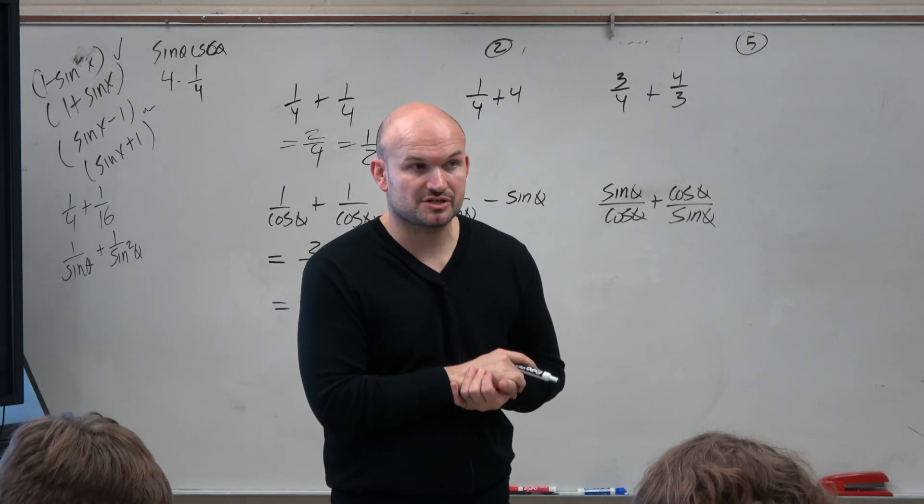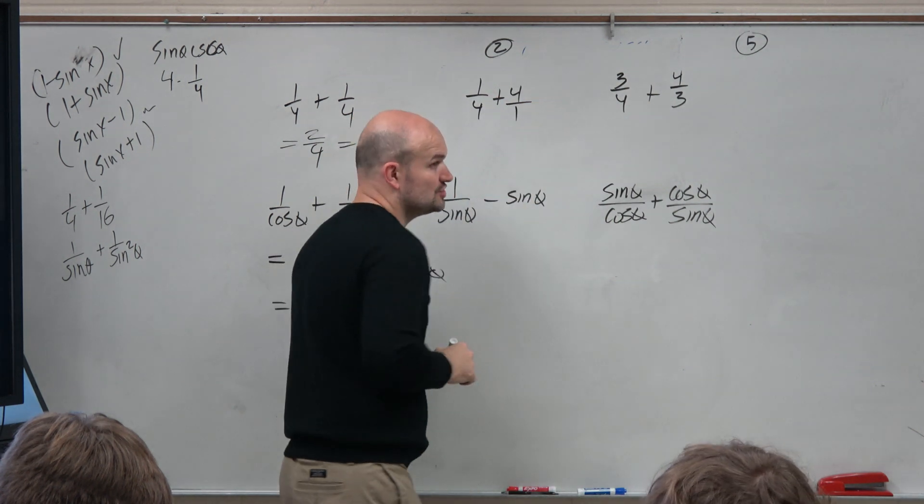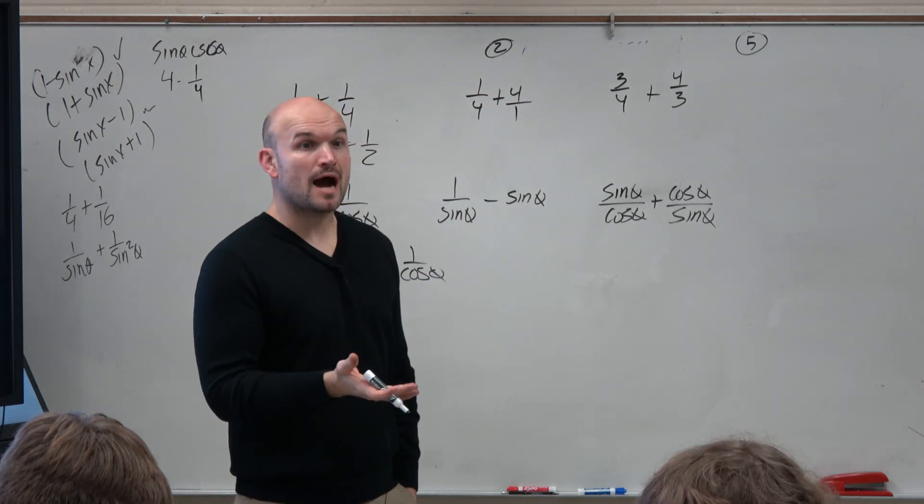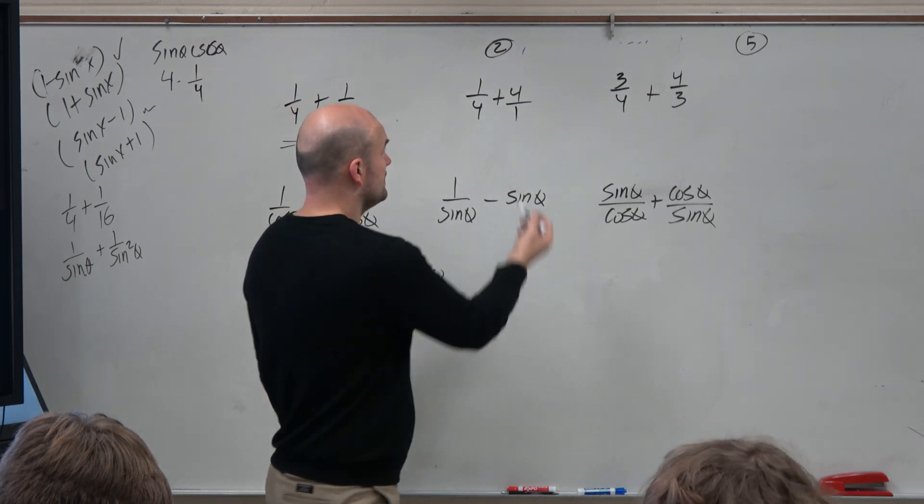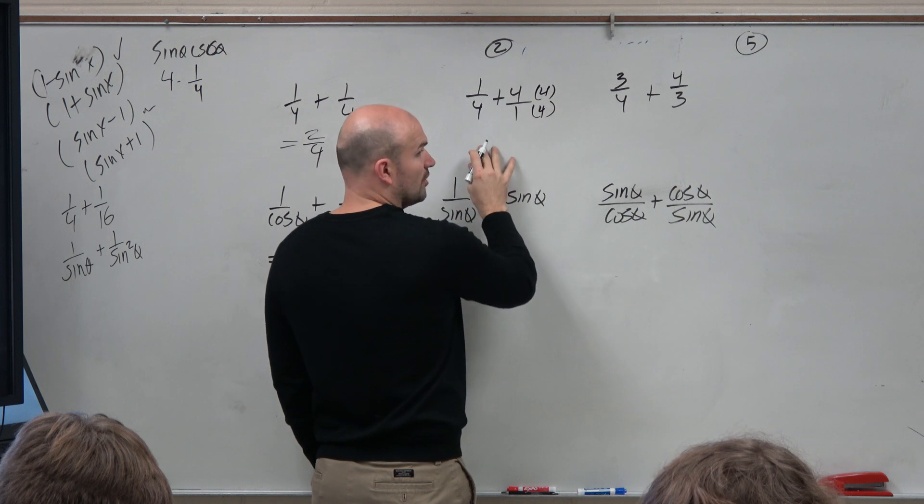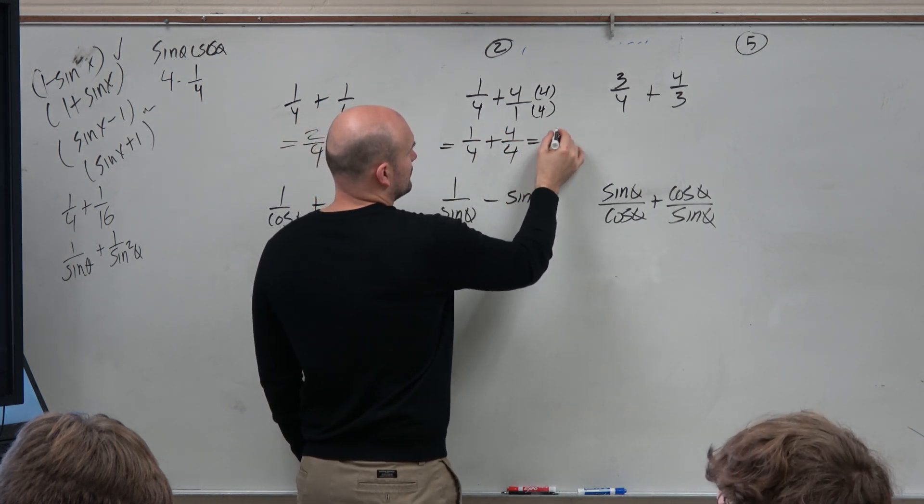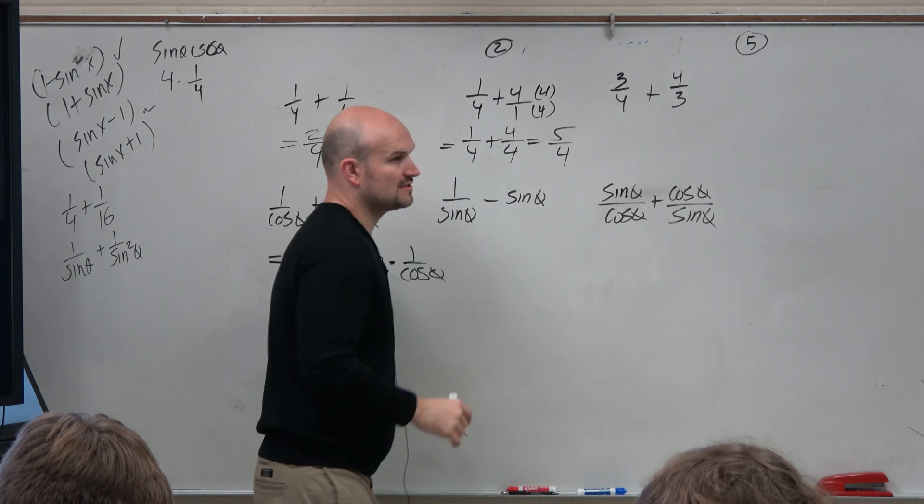All right. Let's look about, what about when you add fractions that don't have the same denominator? Well, a fraction times an integer, change that to a fraction. Now we need to obtain common denominators. The common denominator of 4 and 1 is just 4. So you're going to multiply by 4 over 4. So therefore, we have 1 fourth plus 4 fourths equals 5 fourths.